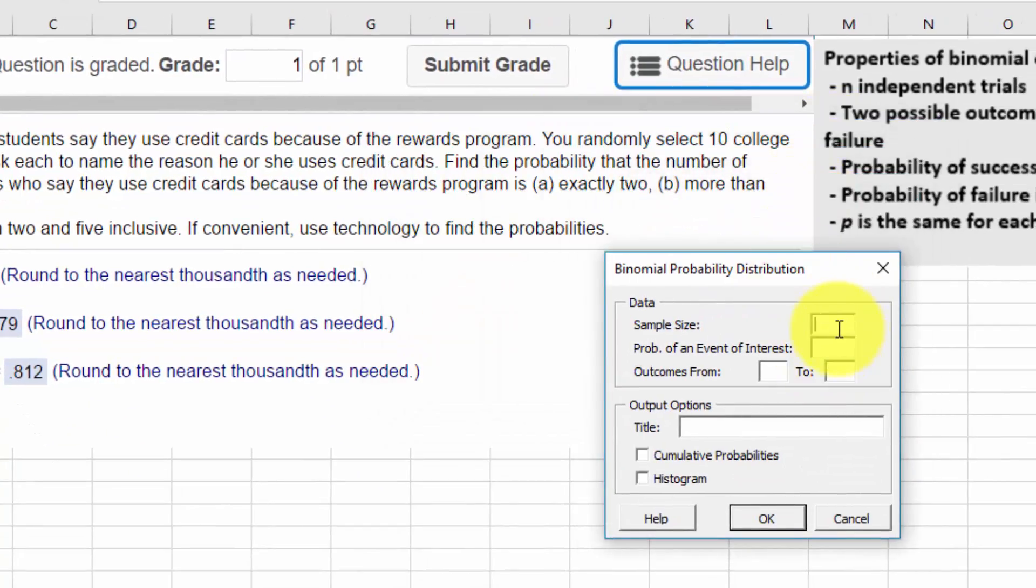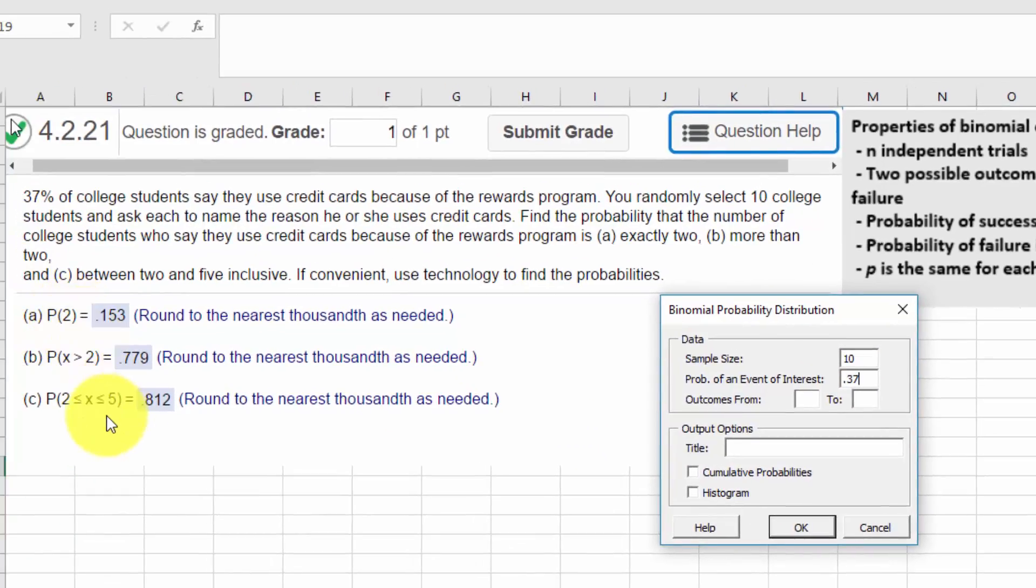Our sample size is 10. The probability of the event is 0.37. We can convert that proportion of 37 percent to 0.37. In this case we're interested in outcomes from 2 to 5, so I want to put that in there. And we want the cumulative probabilities. So I'm just going to click on OK.